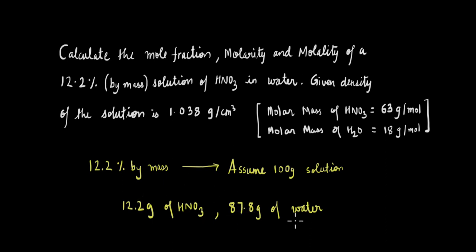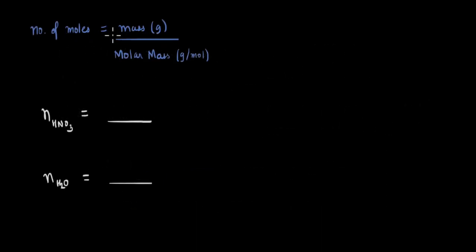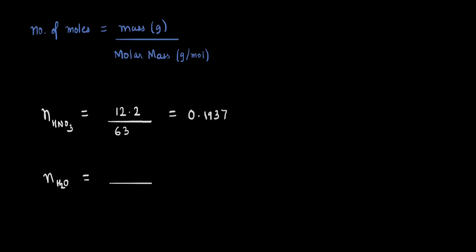We know the molar masses of HNO3 and water, so since we have the masses and their molar masses, we can calculate the number of moles. The number of moles is equal to the mass divided by the molar mass. For HNO3, the mass is 12.2 grams and the molar mass is 63 grams per mole, so the number of moles of HNO3 comes out to be 0.1937.